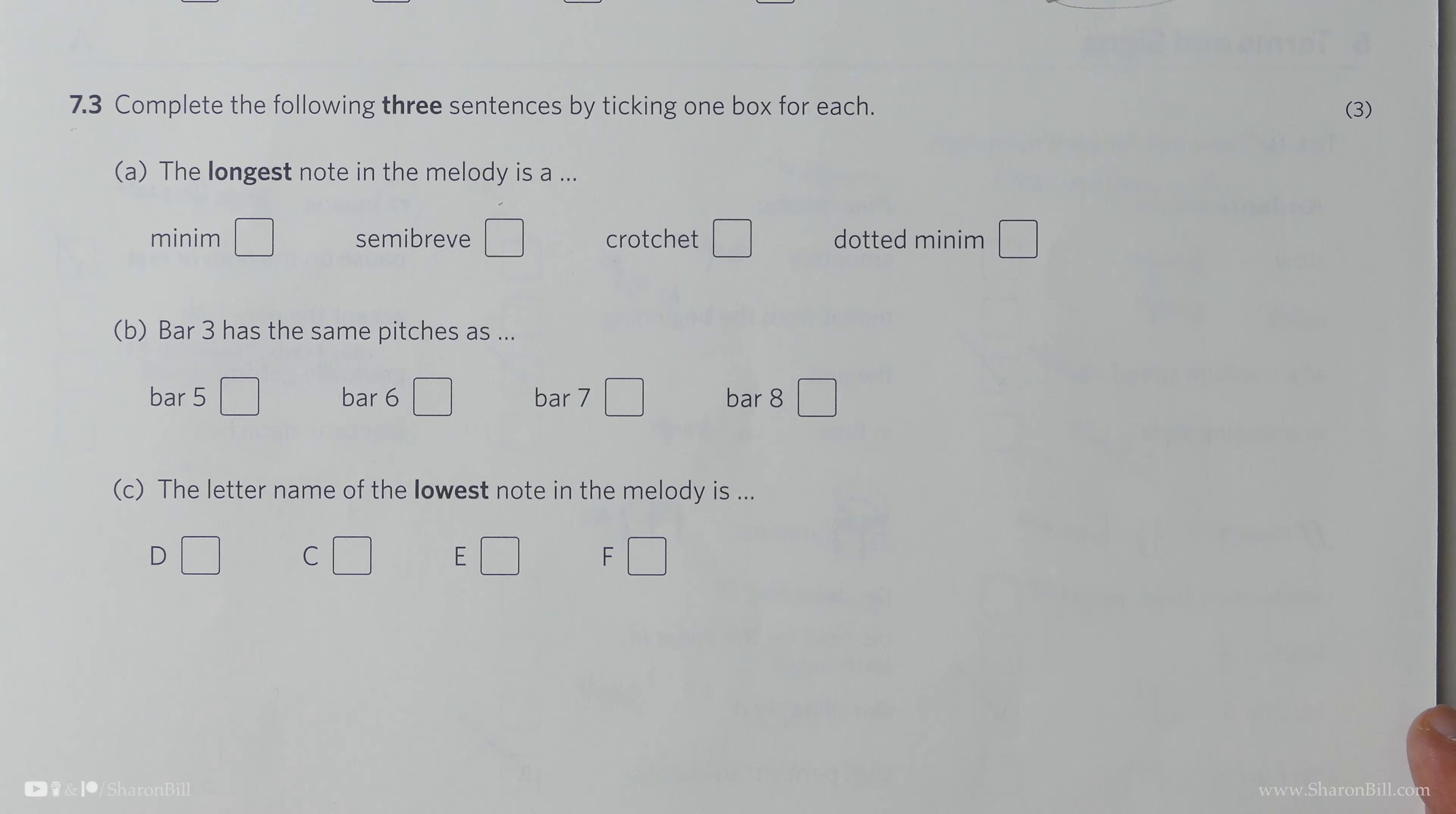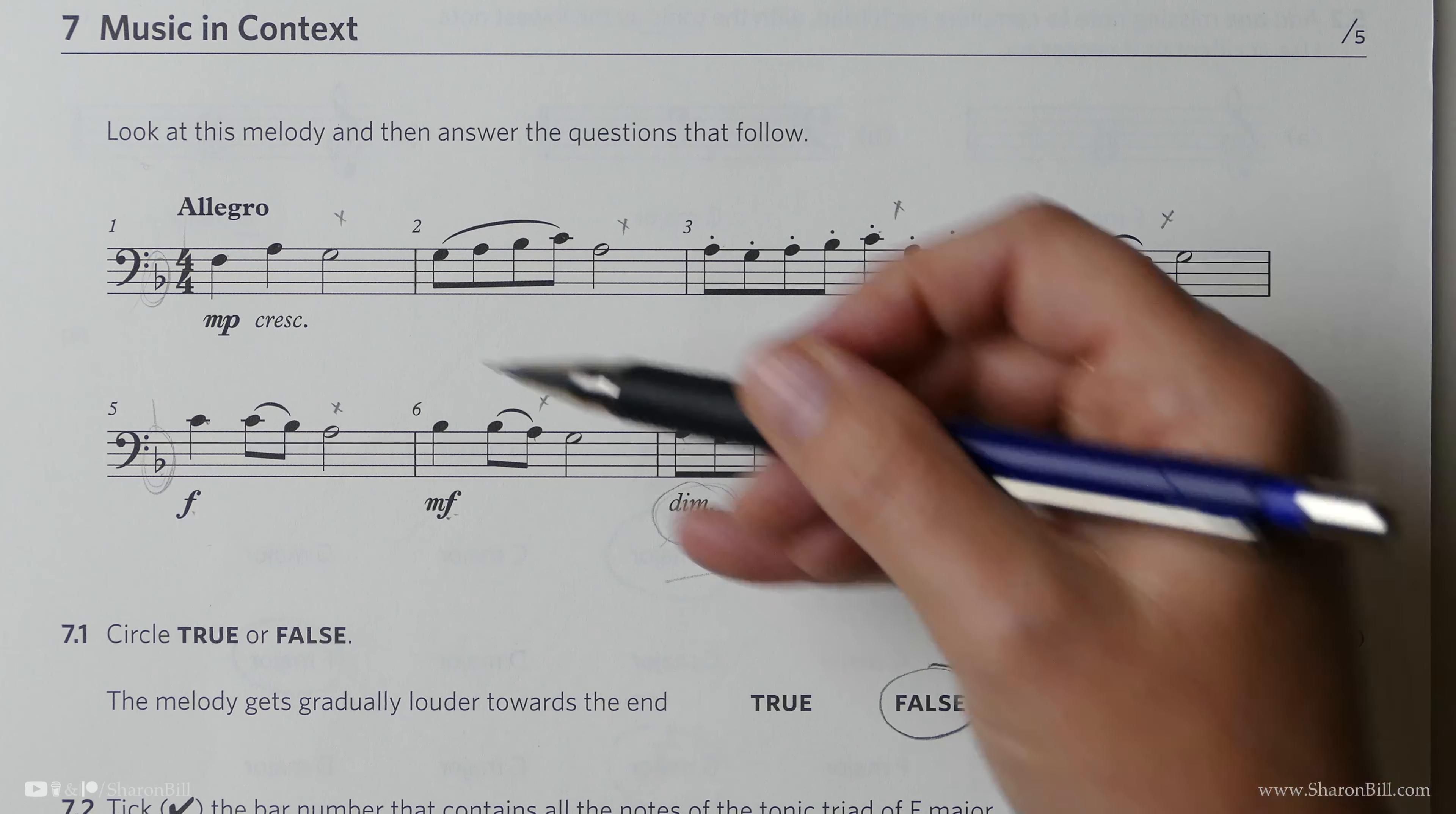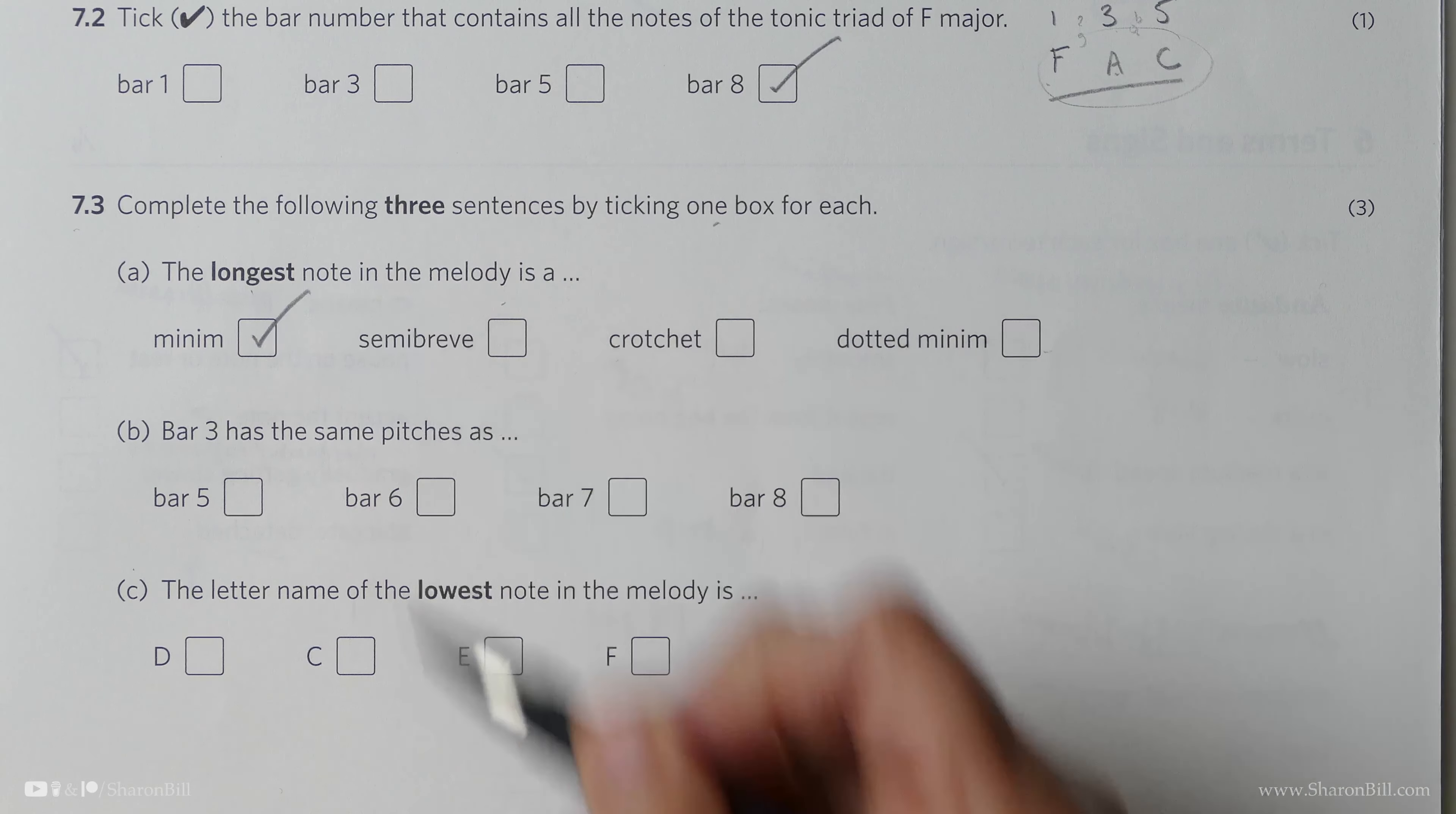Let's continue. We need to complete the following three sentences by ticking just one box for each. The longest note in the melody. So, let's look. What is, don't get sidetracked here, let's just find out what it is first, and then we can check off the correct box. So, we've got a Minim. That's the longest so far. Still just a Minim. Each time, that's the longest note. And so, the longest note, in any case, is a Minim, a two-beat note.